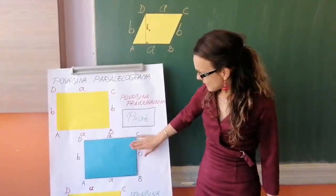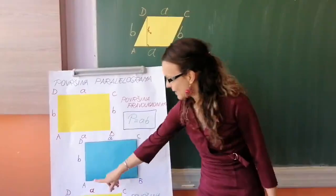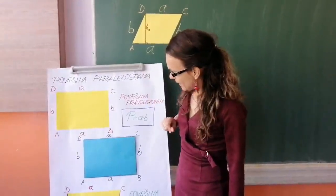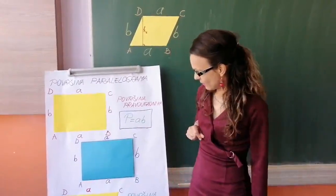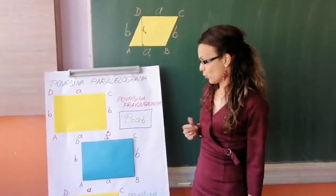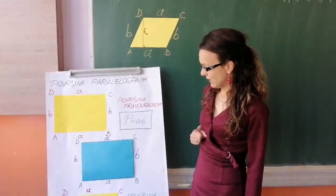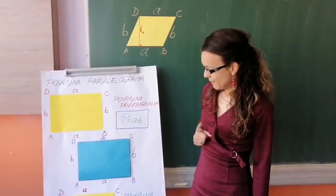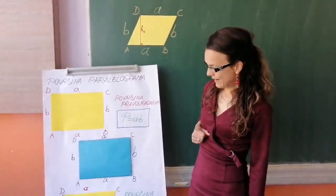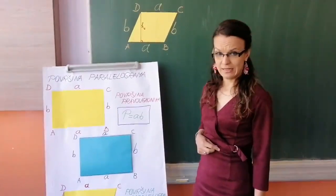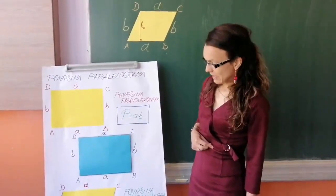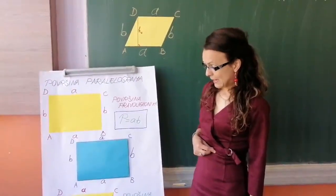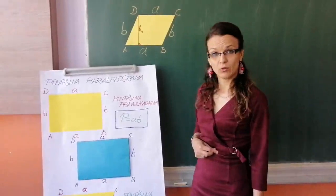Ja sam ovdje prikazala jedan plavi pravougaonik stranica A, B, C, D. Taj svoj pravougaonik ja ću pokušati pokazano transformisati u jedan paralelogram. A to je moguće ukoliko je visina paralelograma odgovara jednoj stranici pravougaonika, a ona druga stranica pravougaonika odgovara jednoj od stranica paralelograma na koju ta visina pada.